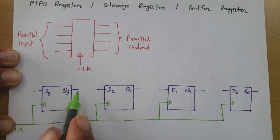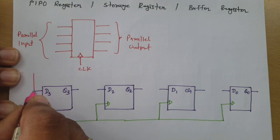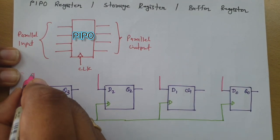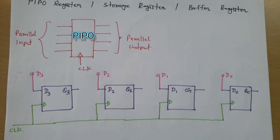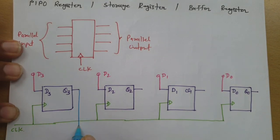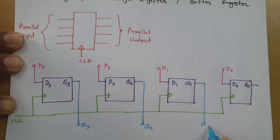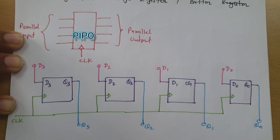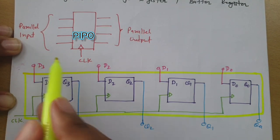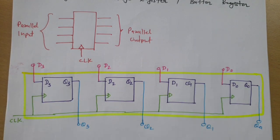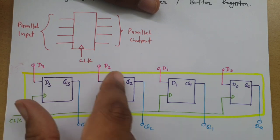Whenever we give the clock signal, the input will appear at the output side. This is the parallel input: D3, D2, D1, and D0. And the parallel output is Q3, Q2, Q1, and Q0. Looking at this whole package as a block, with respect to the clock, this input will appear at the output side.